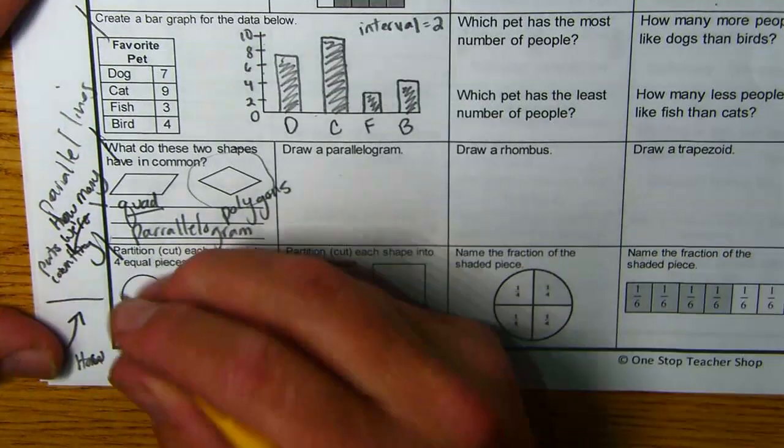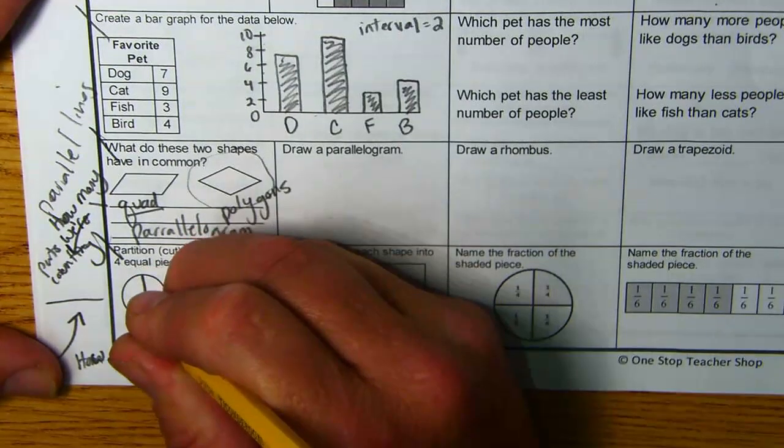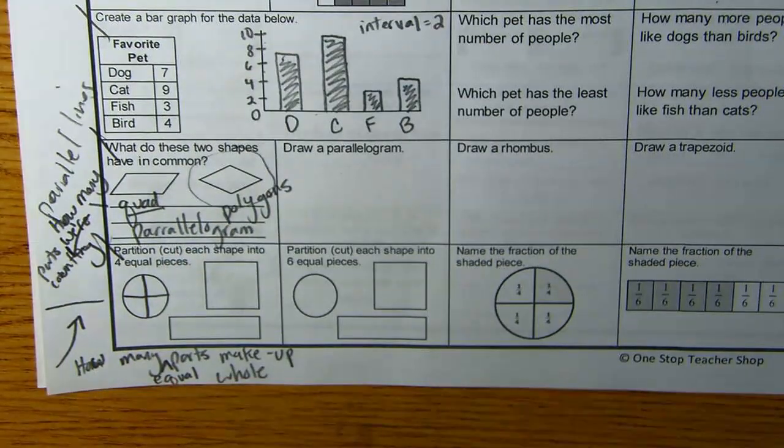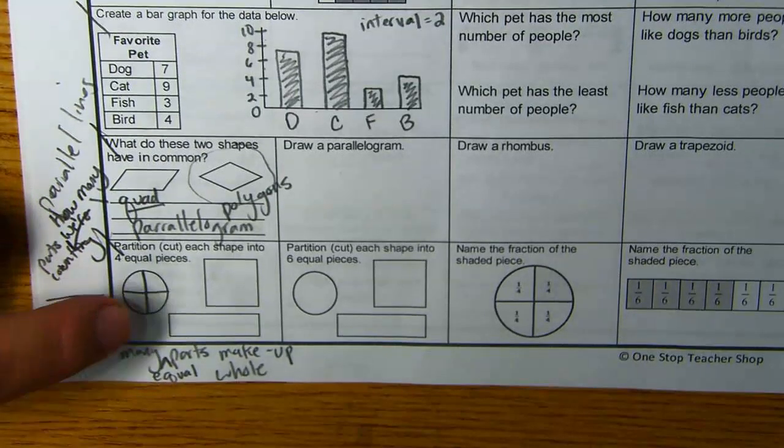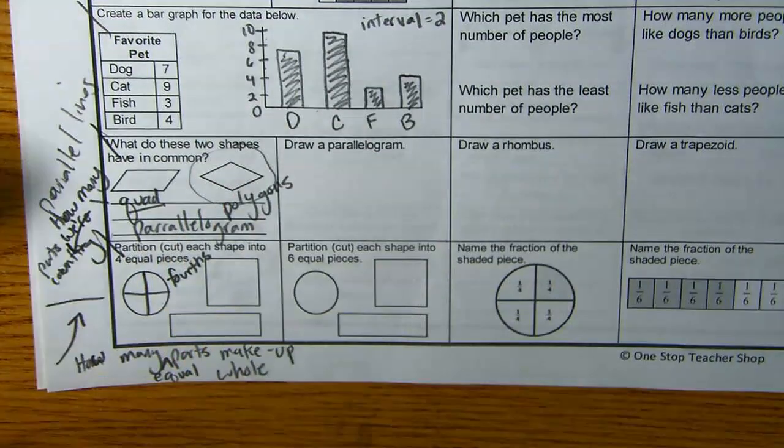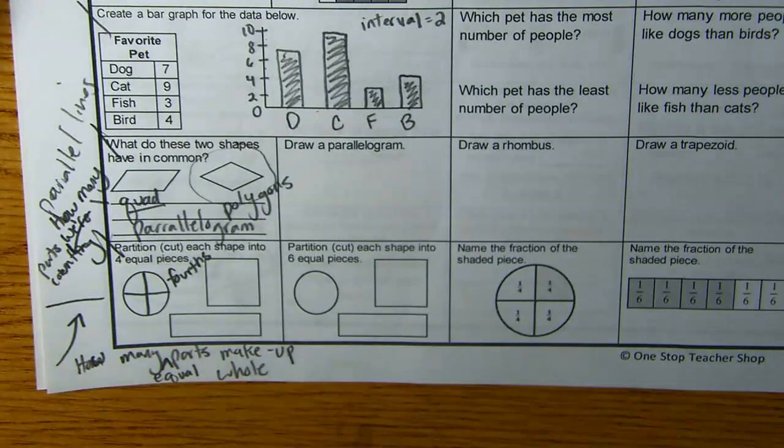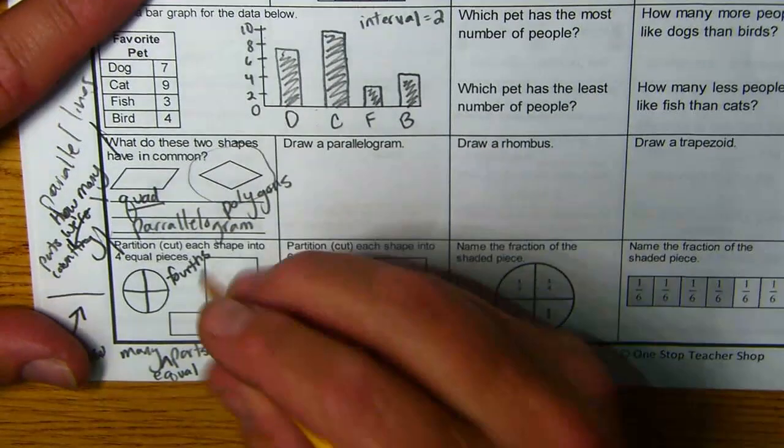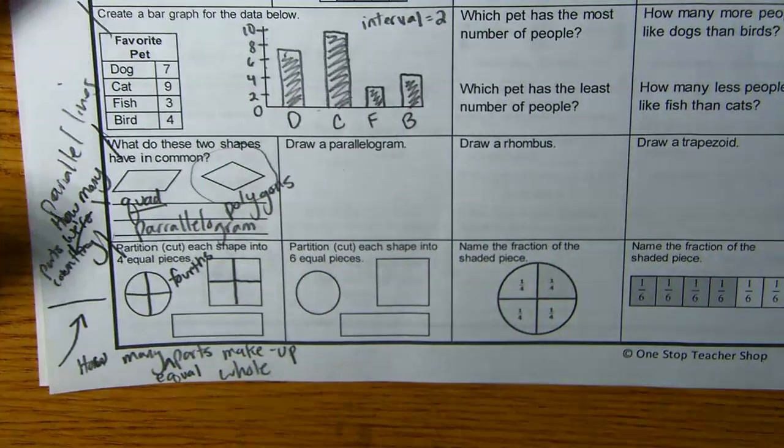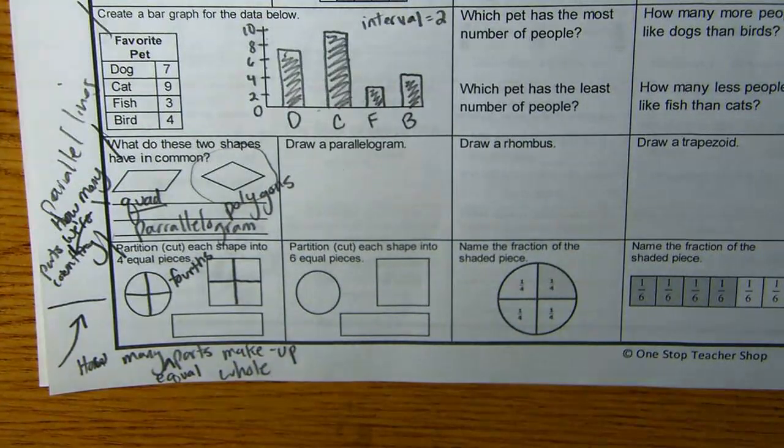Okay. So I got a circle here. To divide something that's a circle into four parts, you're going to make a plus sign. Those are four equal parts that make up a whole. So this circle is cut into fourths. What about cutting a square into fourths? Same thing. Plus sign. Fourths.